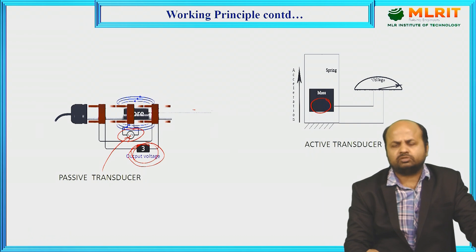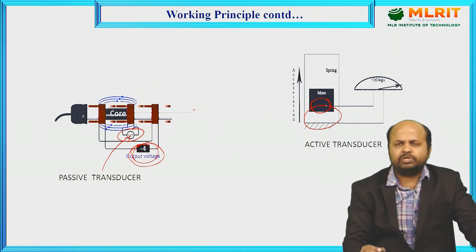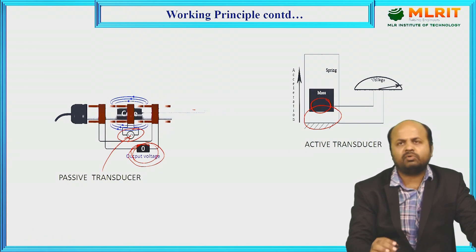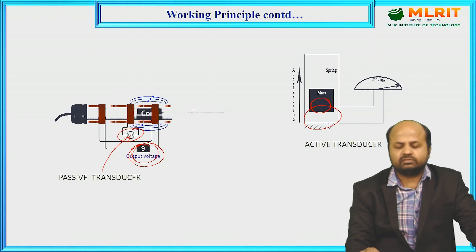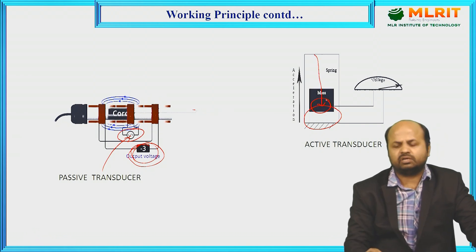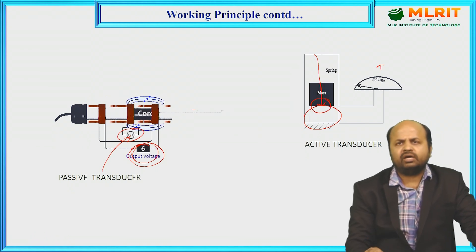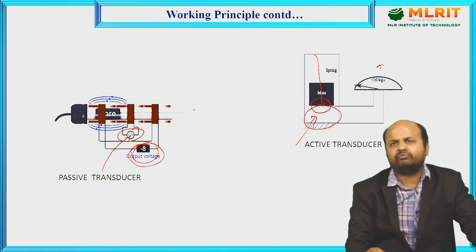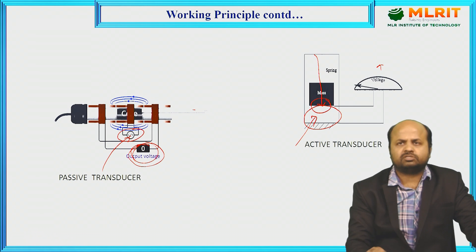In an active transducer, one example is piezoelectric material. Piezoelectric material is a naturally occurring substance in the form of sand. Whenever some pressure is applied to the piezoelectric material, some voltage is generated. This is the principle of an active transducer — it does not require any external power supply for its operation.